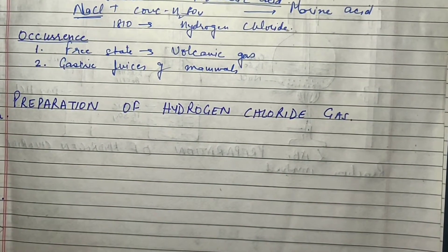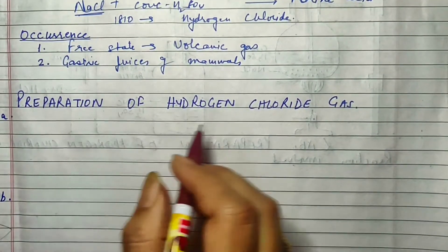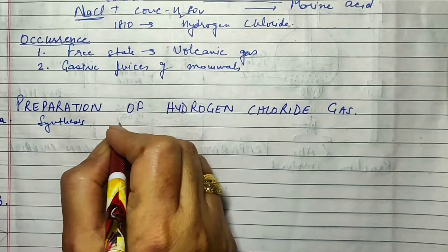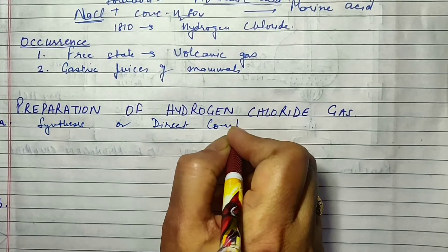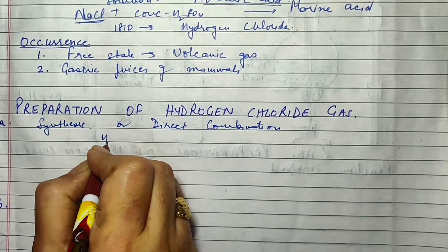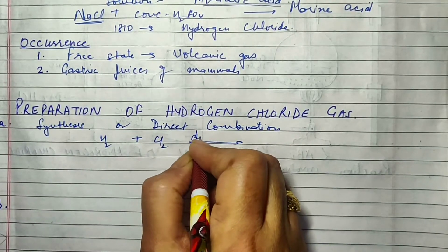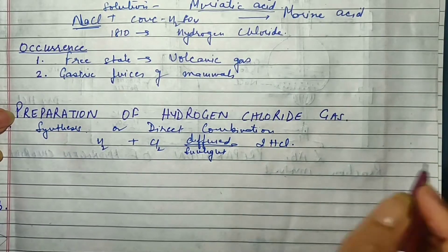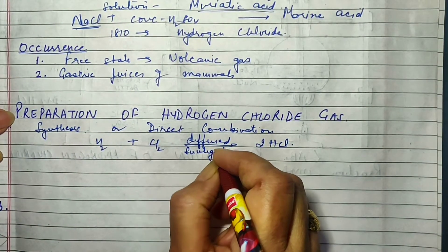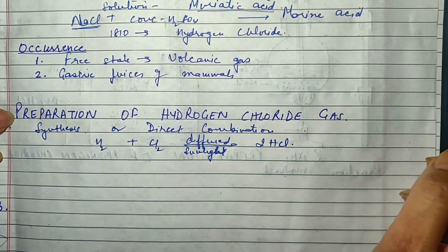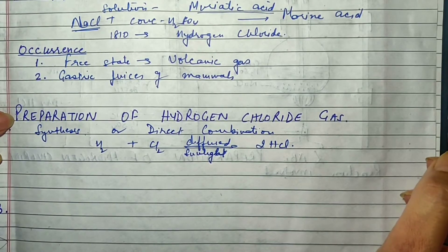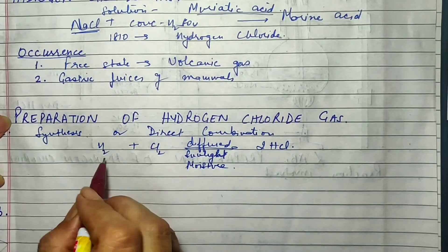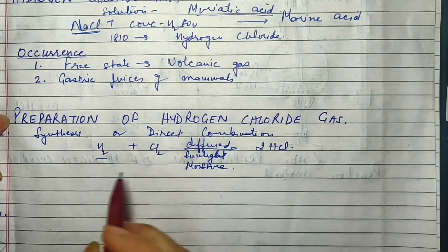It helps in acidifying the medium of food and also in the process of digestion. Now, how is hydrogen chloride gas prepared? One method is synthesis, which means direct combination. Hydrogen and chlorine can be directly combined in the presence of diffused sunlight to form HCl. It is important that the sunlight is diffused — the reaction takes place best in diffused sunlight. If the sunlight is direct, the reaction becomes explosive; if it is dark, the reaction is negligible. Moisture also acts as a catalyst.